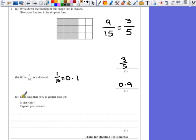Part C. Tanya says that 75% is greater than 0.8. Is she right? And explain your answer. So we've got two parts to this question. We have to say is it right, but also explain it.